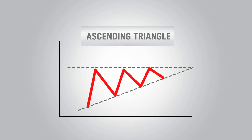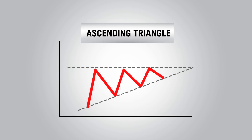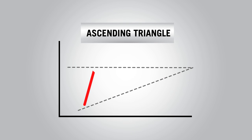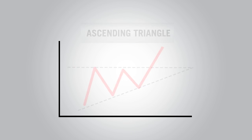Ascending triangles are usually found in bullish markets and are most reliable when found in an uptrend. The top part of the triangle appears flat, while the bottom part of the triangle has an upward trend line. The price will get closer and closer to the resistance line before it breaks out to the upside.